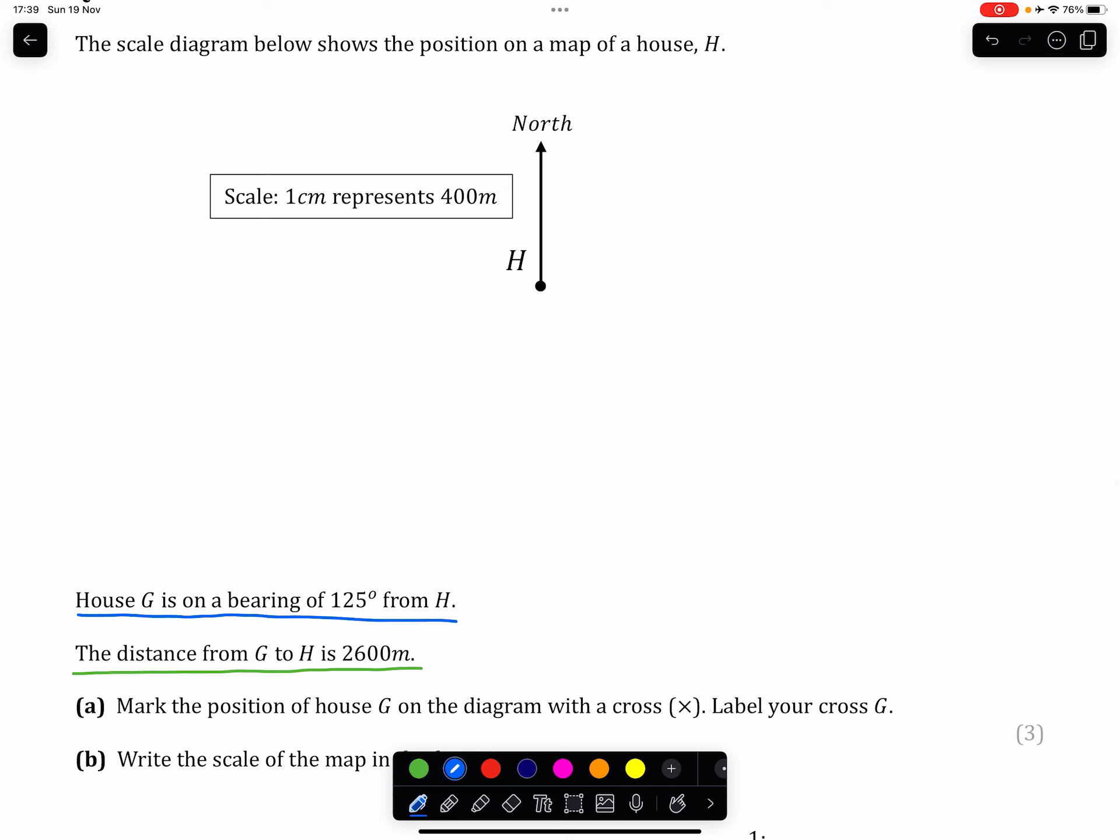So the first thing that we can do is deal with the bearing. We can measure a bearing of 125 degrees from H. So that is the angle drawn clockwise from north is going to be 125 degrees. If you use your protractor, you're going to be able to mark 125 degrees on the diagram.